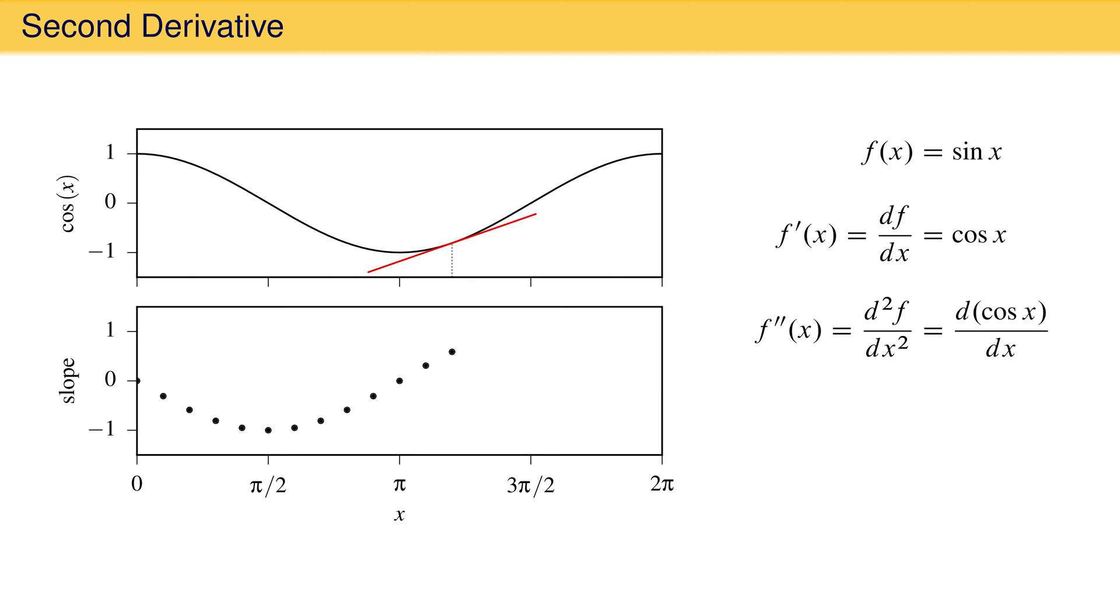As x gets larger, the slope becomes positive, reaching its largest value at 3π/2. It then declines and returns to zero at 2π. The collection of slopes in the bottom plot define a function which you might recognize as the negative of sin x. Negative sin x is therefore the first derivative of cosine and the second derivative of sin x, the original function.